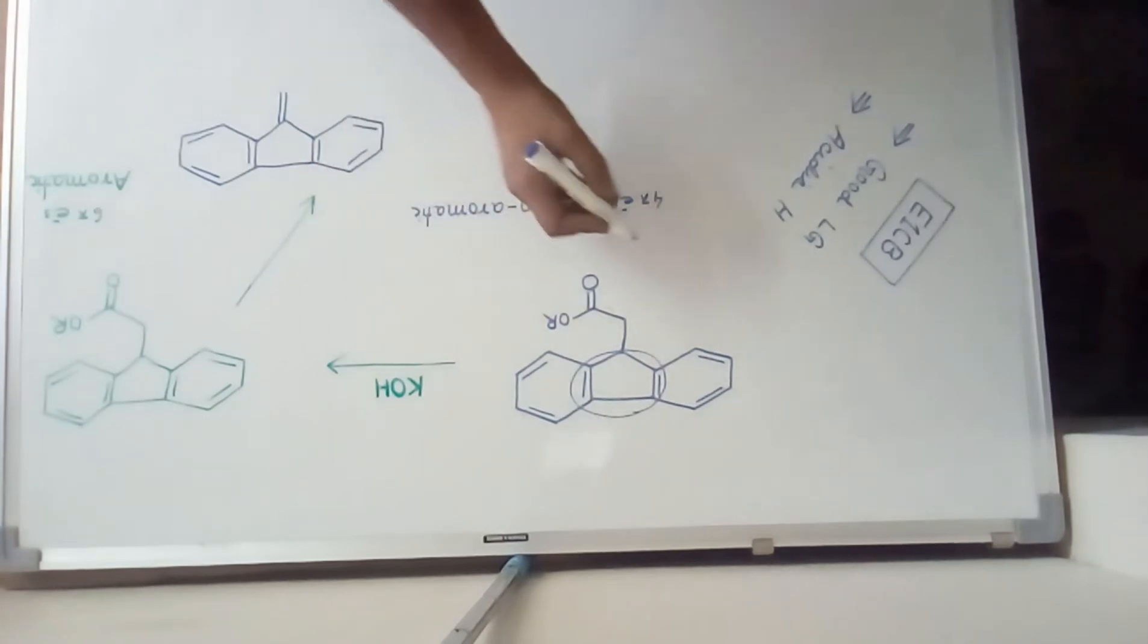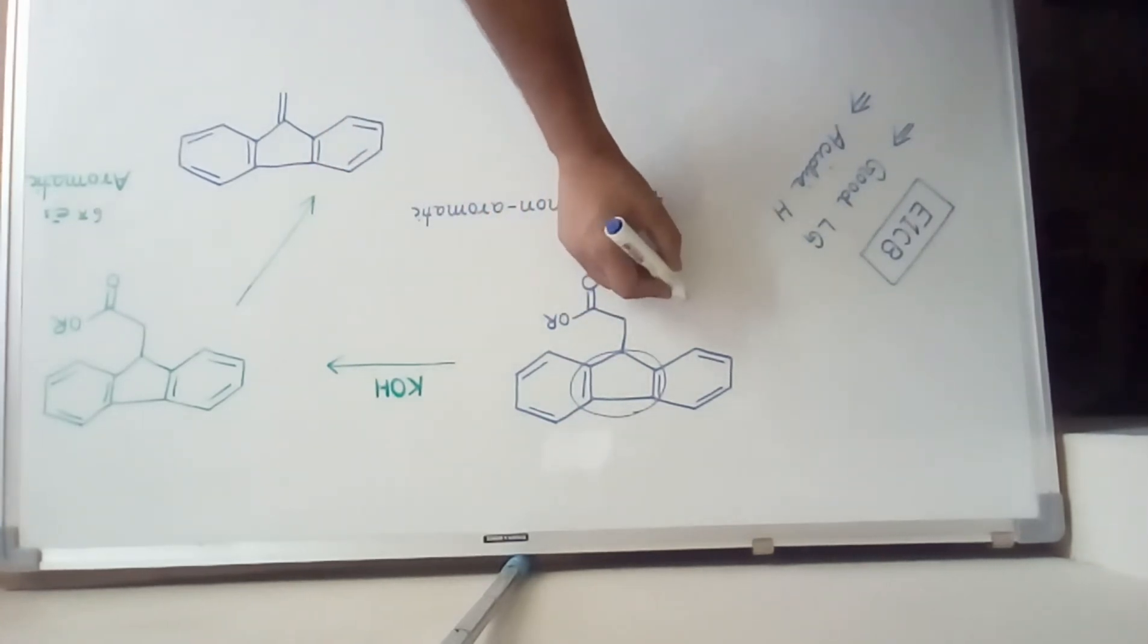Now even if you treat with a weak base, the base will abstract this proton and then a carbon ion will be generated.